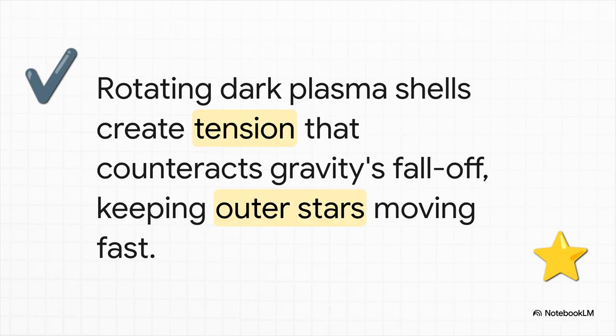This brings us right back to those fast-moving outer stars. In this model, it's not just a big, dumb halo of dark matter holding things together. Instead, the rotating dark plasma structure generates a kind of tension that counteracts gravity's normal fall-off with distance. It basically forces the entire system of stars to rotate more like a solid disk, keeping those outer stars moving at high speed.